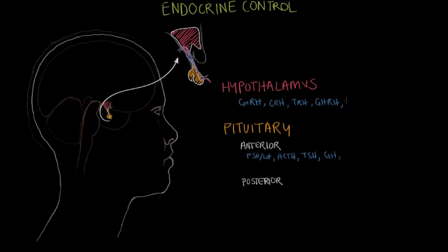Last but not least, we have prolactin-inhibitory factor, PIF. Prolactin-inhibitory factor is a little bit different because it's constantly being released, and when it stops being released, that's when the pituitary gland is signaled to release prolactin. Prolactin is a hormone involved in milk production in moms. Some of the anterior pituitary hormones go down and directly stimulate other endocrine glands, like FSH and LH, but some directly affect parts of the body, like growth hormone and prolactin.